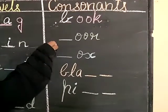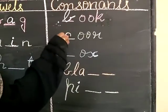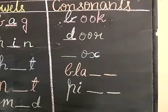One more example. Here, dash O-O-R, door. So, I am writing here, D-O-O-R, door.